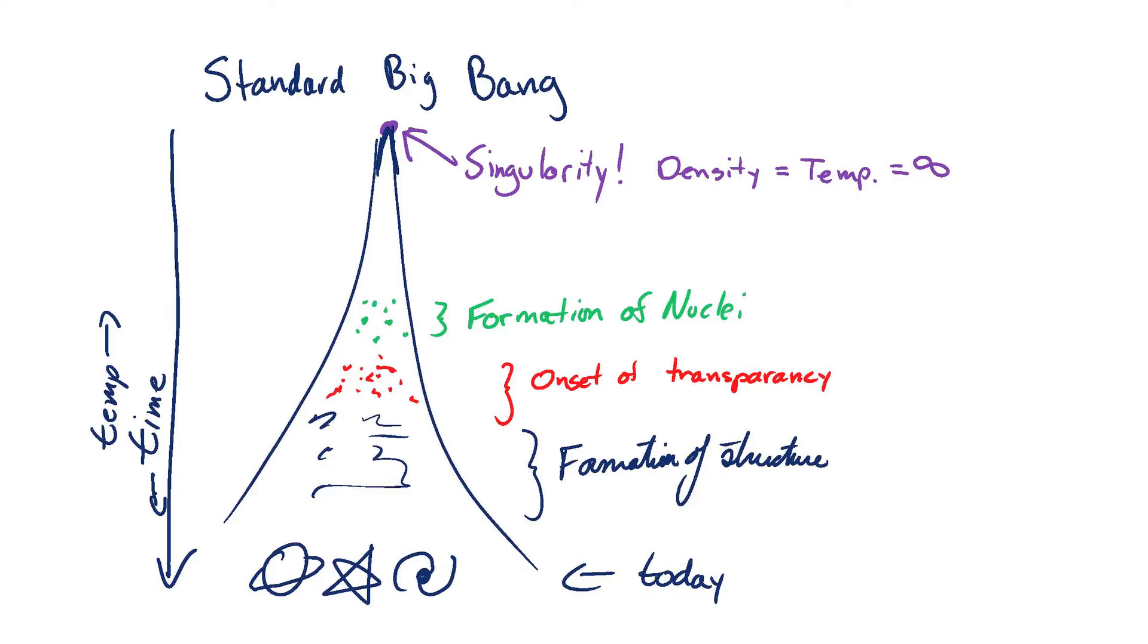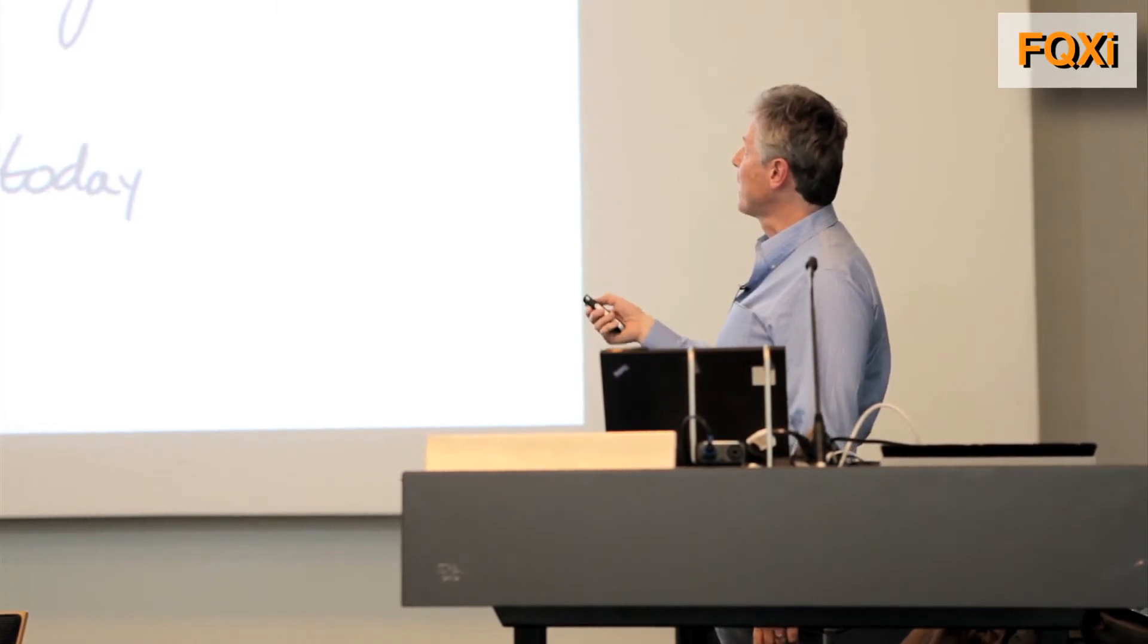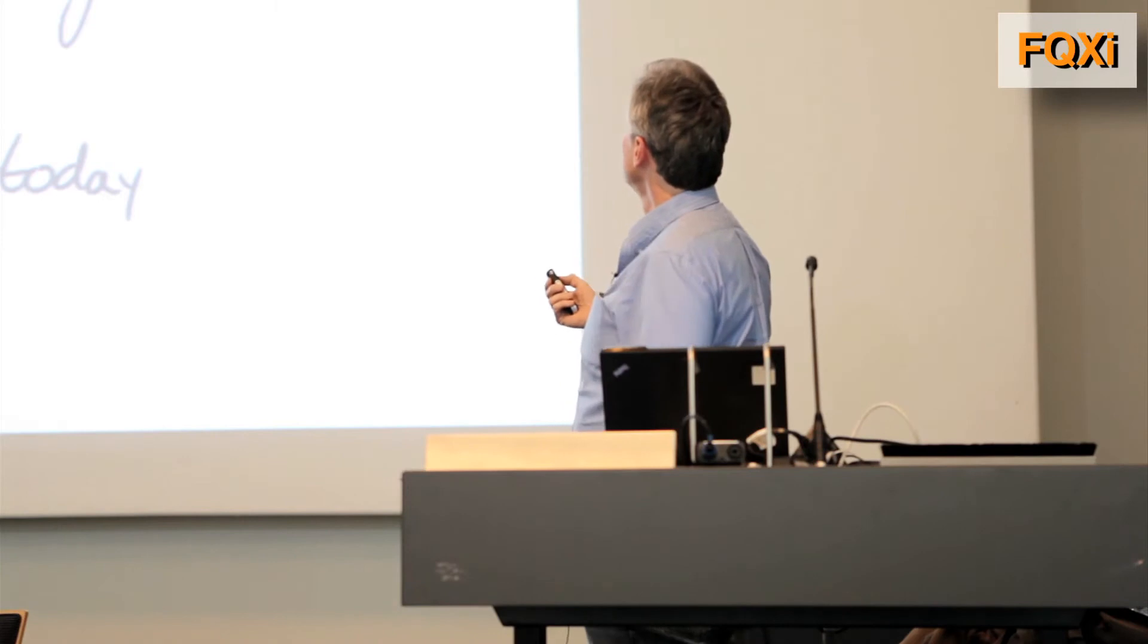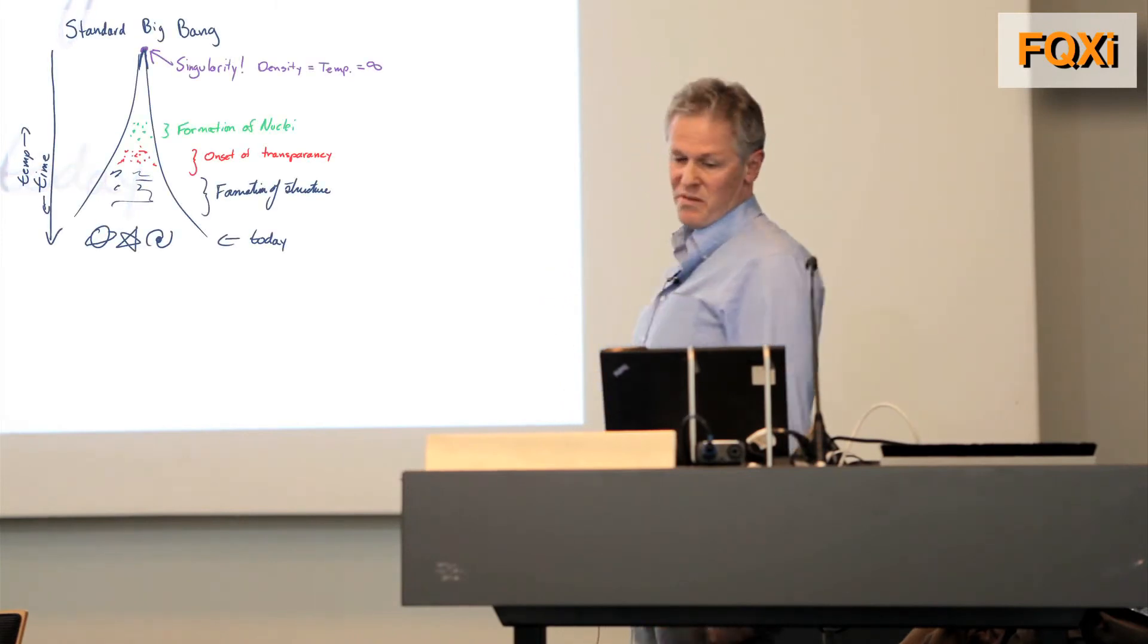As we go back in time we extrapolate back to times of higher temperature and higher density. We have an expanding universe, and in fact the extrapolation goes all the way back to a singularity 14 billion years ago with density and temperature of infinite values.